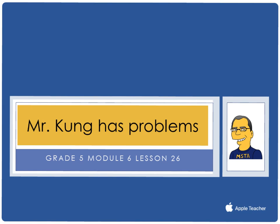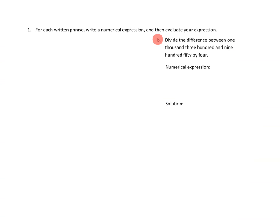Hello and welcome to another episode of Mr. Kung Has Problems. Tonight, in Grade 5 Module 6 Lesson 26, we are solidifying our writing and interpretation of numerical expressions. This is very much a review of numerical expression work that we did earlier on in the fifth grade year. Let's take a look at three problems from tonight's homework.